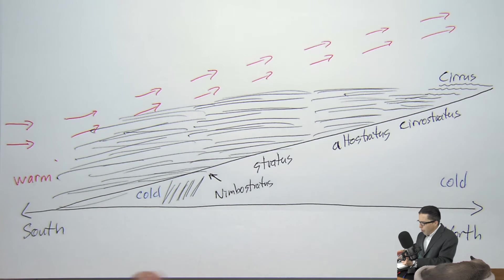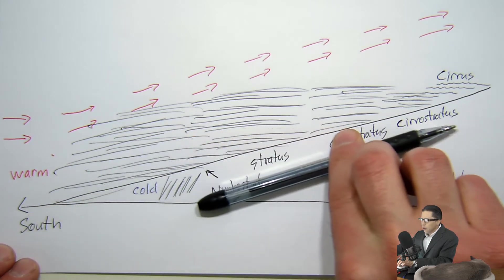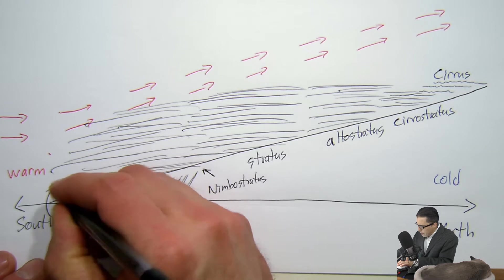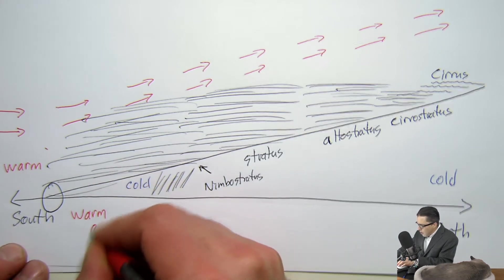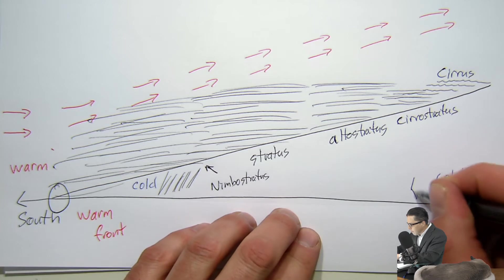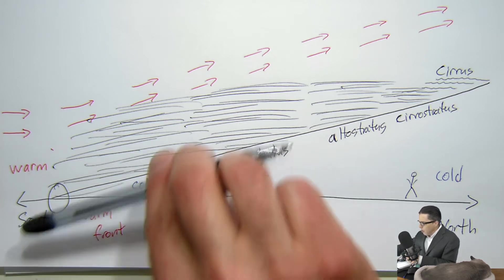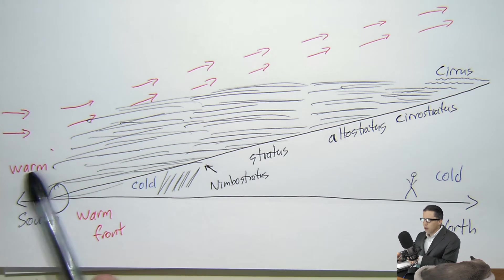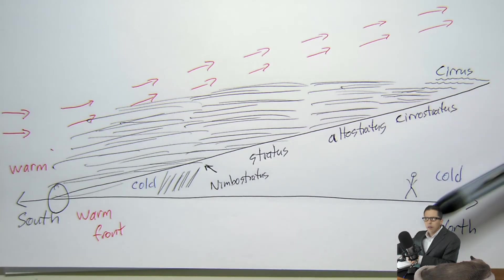Not only is the warm air riding up over the cold air, but the entire wedge is also moving — in this diagram, moving to the right. The spot on the ground where the warm air meets the cold air at the surface is called a warm front. It's called a warm front because as this ramp passes over you, temperatures increase — the air behind it is warmer than what you're currently sitting in.